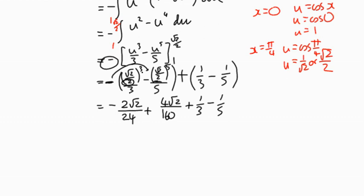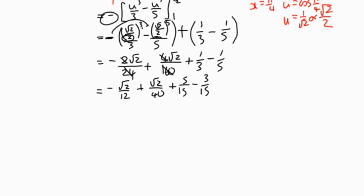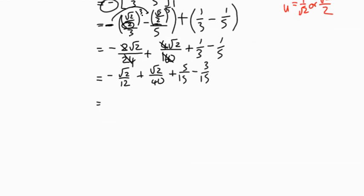I'm going to multiply out this bracket. So negative times negative is positive. I've got root 2 to the power of 5, which is 4 root 2. 2 to the power of 5 is 32. Also divided by 5 means we're multiplying 32 times 5 is 160 plus a third minus a fifth. So evaluating them is a bit of a pain, but there's nothing too difficult in time. If we can simplify those, divide through by 2 and we get root 2 over 12. If we can divide through by 4 and we get plus root 2 over 40. And then a third minus a fifth. Well, that's 15ths. So 5 15ths minus 3 15ths.